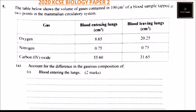We have the gas, blood entering lungs in cm³, and blood leaving lungs in cm³. Oxygen: blood entering lungs is 8.65 cm³, blood leaving lungs is 20.25 cm³. Nitrogen: blood entering lungs is 0.5, and blood leaving lungs remains the same. Carbon dioxide: blood entering lungs is 55.60 cm³, blood leaving lungs is 1.65 cm³.